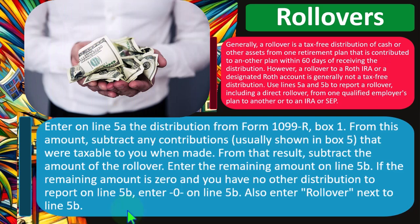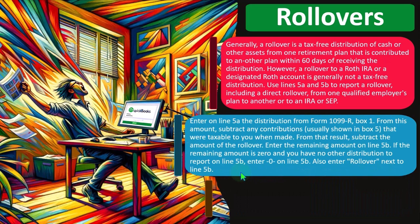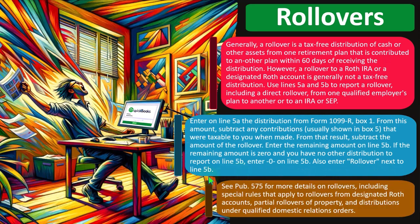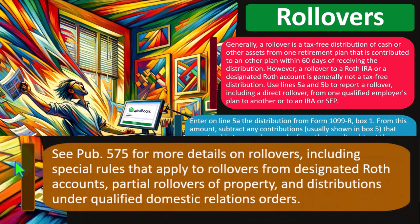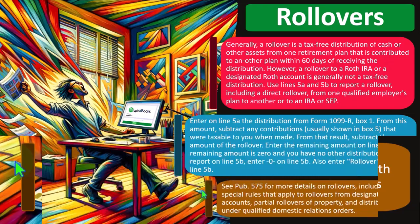So if the remaining amount is zero and you have no other distributions to report on line 5B, enter zero. So if the whole thing is rolled over, which is often the case, you might roll over the whole thing. See publication 575 for more details on rollovers, including special rules that apply to rollovers from the designated Roth accounts, partial rollovers of property, and distributions under qualified domestic relation orders.